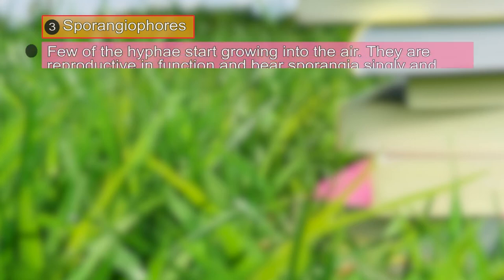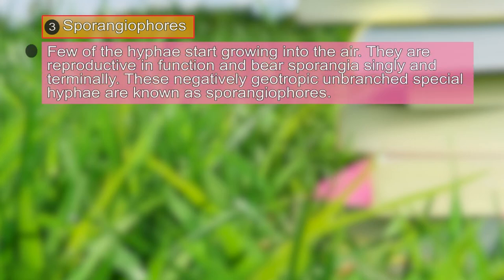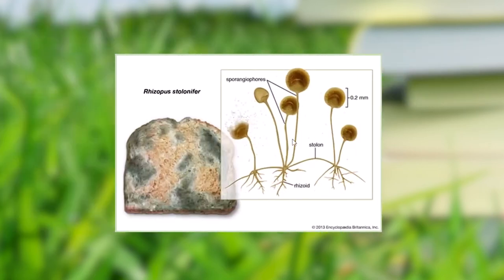The third type of hyphae found in Rhizopus is sporangiophores. These grow into the air, are reproductive in function, and bear sporangia singly and terminally — at the tip of each sporangiophore we find a single sporangium. These negatively geotropic, unbranched special hyphae are known as sporangiophores. Here you can see the picture of three different types of hyphae found in Rhizopus.